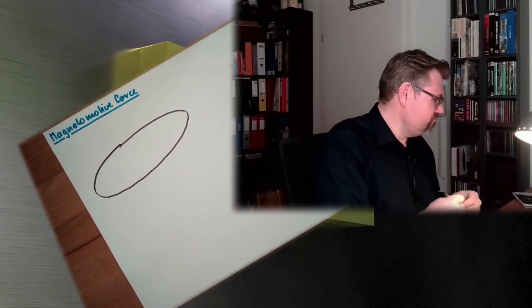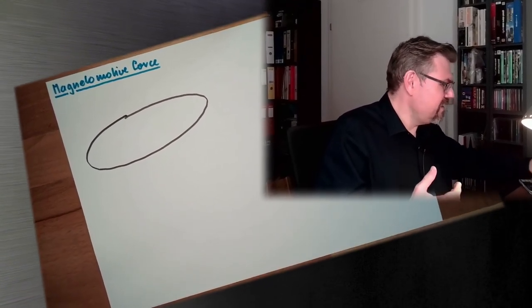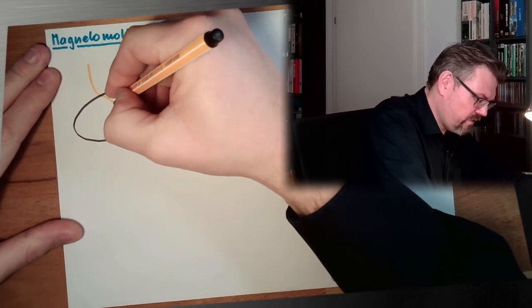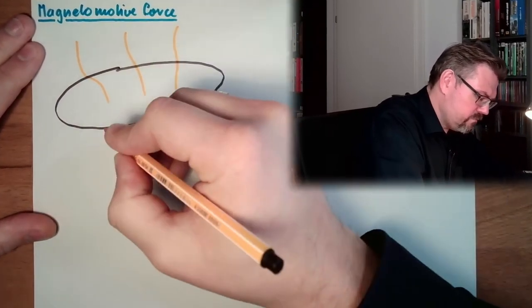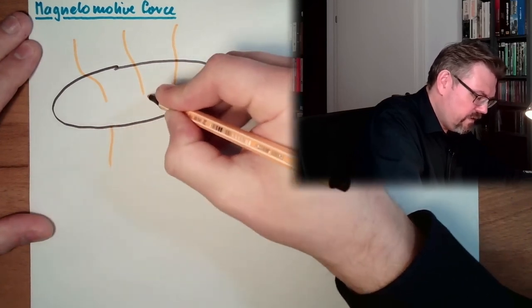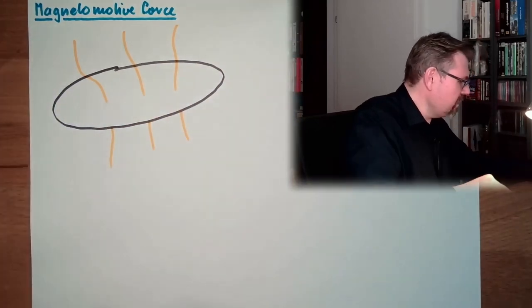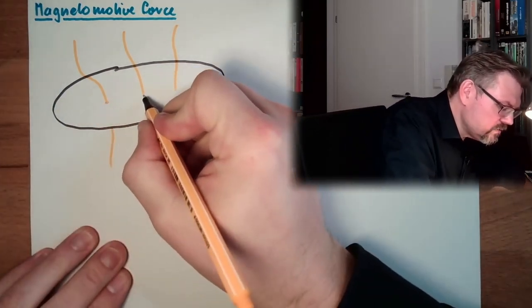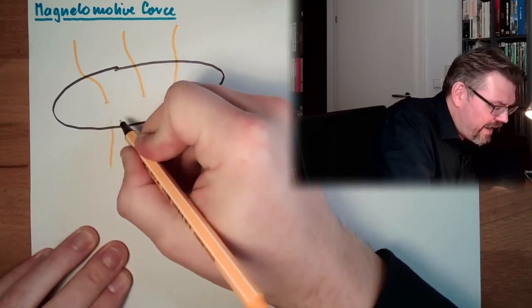We've made this example where current was pushing through a surface. So I will draw now a surface. This is my surface. And now I have several wires, current paths through the surface. Here is a current path, current path, current path. Here we are leaving, we are leaving, we are leaving. So we're punching through the surface. And here we are behind the surface.